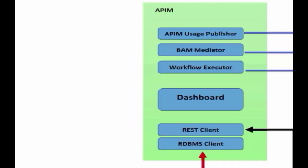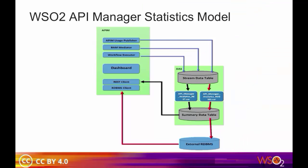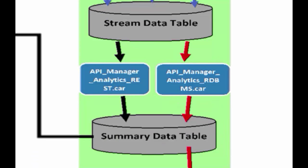By default, the REST client is configured and uses the WSO2-DAS REST API to fetch summarized data. In this diagram, the path indicated in black demonstrates the path when API Manager is configured with the REST client. The path in red demonstrates the RDBMS client data flow path. In this case, the same data stored in the DAS internal table is also stored in the external RDBMS.